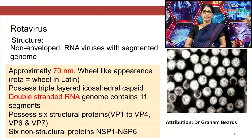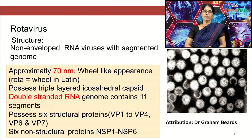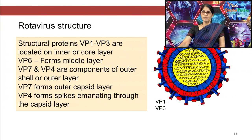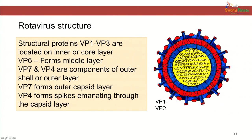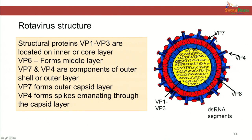The double-stranded RNA contains 11 segments and each segment codes for a different gene product. It possesses 6 structural proteins VP1 to VP4, VP6 and VP7, and 6 non-structural proteins NSP1 to NSP6. VP1 and VP3 are present in the inner core layer. VP6 forms the middle layer. VP7 and VP4 are present on the outer layer of the capsid — VP7 forms the outer layer and VP4 protrudes out of the capsid like spikes.